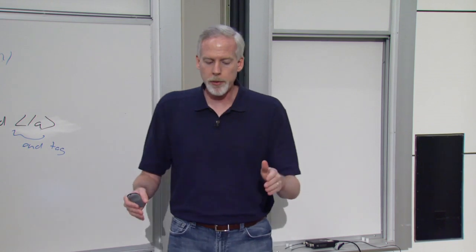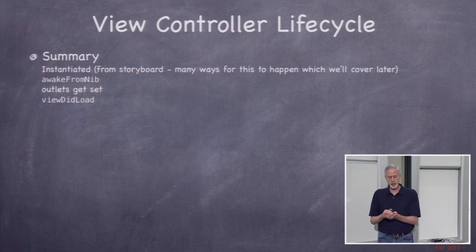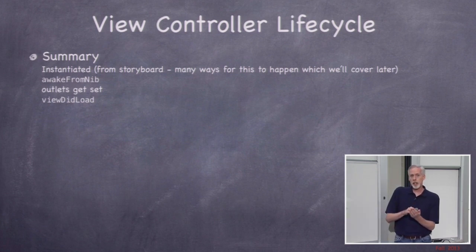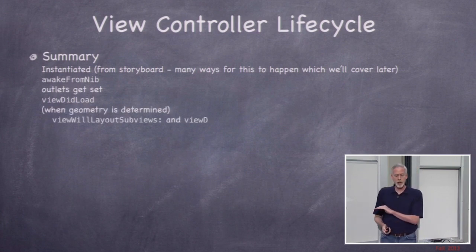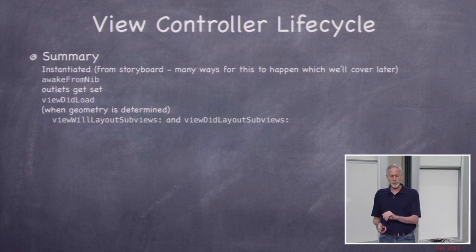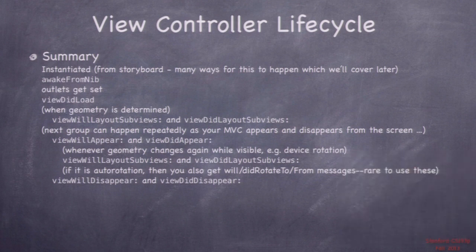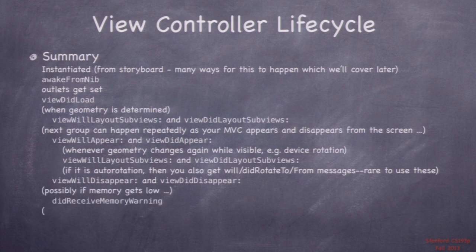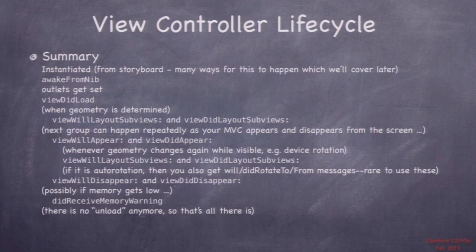Here's a summary of the view controller lifecycle: instantiated from storyboard (or alloc init) → awakeFromNib (or initWithNibName:bundle: in code) → outlets set → viewDidLoad → viewWillLayoutSubviews/viewDidLayoutSubviews → viewWillAppear → if geometry changes while visible, layout subviews methods get called again → viewWillDisappear → low memory warning can happen at any time. That's the view controller lifecycle from start to finish.